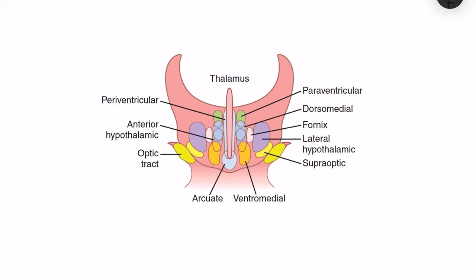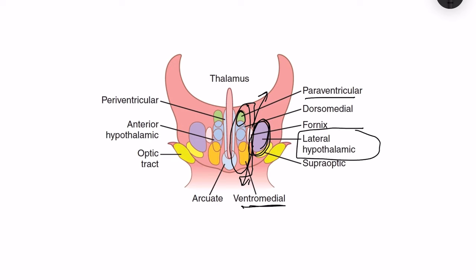This is the coronal section of the hypothalamus, the diagram taken from Guyton. You can see how the same nuclei are arranged laterally and medially. The ventromedial nuclei are posterior, while the paraventricular nucleus is anterior. The lateral hypothalamic area and supraoptic nuclei are located laterally. We describe hypothalamic nuclei in terms of their location: anterior or posterior, and within that, medial or lateral.